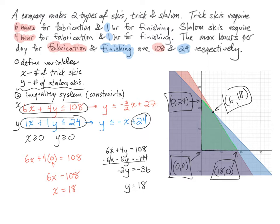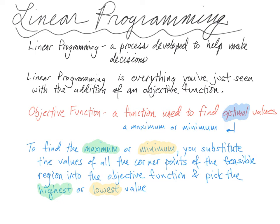Let's get into linear programming now. Linear programming is a process developed to help make decisions — it's everything you've just seen with the addition of an objective function. The objective function is a function used to find optimal values, meaning either a maximum or a minimum. To find the maximum or minimum, you substitute the values of all the corner points of the feasible region into the objective function and pick the highest or lowest value.